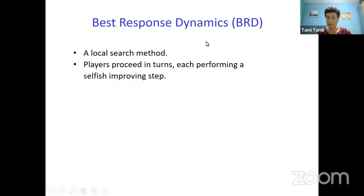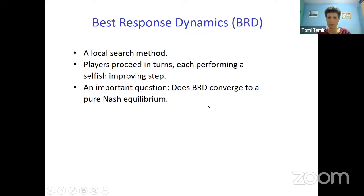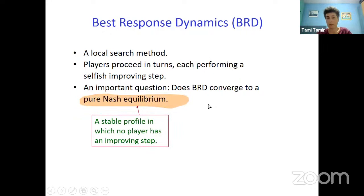Best response dynamics, in short BRD, is a local search method where players proceed in turns, each performing a selfish improving step. One of the questions we always ask is whether BRD converges to a pure Nash equilibrium. A pure Nash equilibrium is a profile in which no player has an improving step — we ask each job if it wants to migrate, and none of them has a beneficial migration. This is what we call a pure Nash equilibrium.